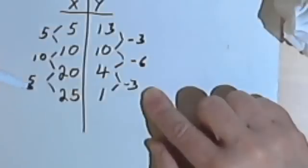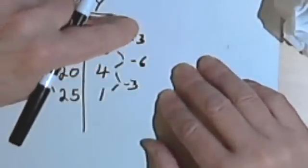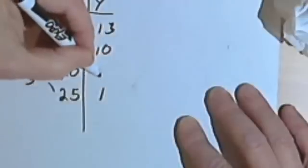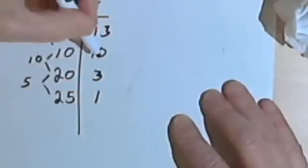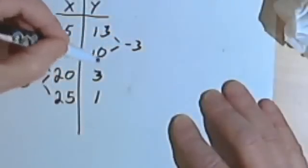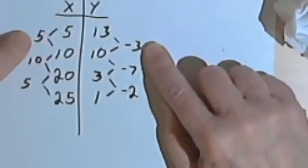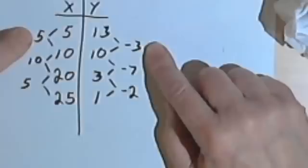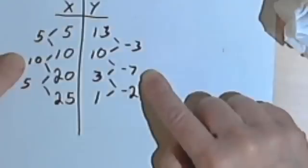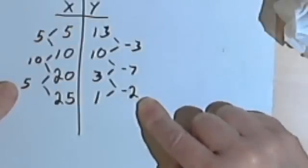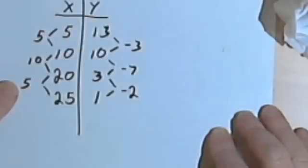Let's see what would happen if it hadn't been a linear function. I'll change one of the numbers — instead of 4 in the y-column, I'll make it 3. Now the differences in the y-column are: 10 minus 13 is negative 3, 3 minus 10 is negative 7, and 1 minus 3 is negative 2. The ratios are negative 3 over 5, then negative 7 over 10 — which can't be reduced to the same value — then negative 2 over 5. I don't have a constant slope, so I don't have a linear function.